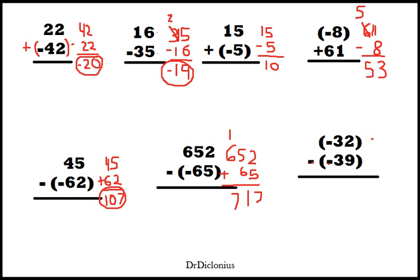So we have negative 32 plus 39. And now we can go back and we can see, okay, how did we deal with negative numbers when we're just adding positive numbers?